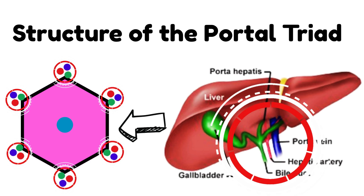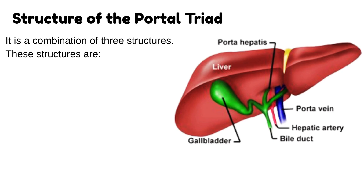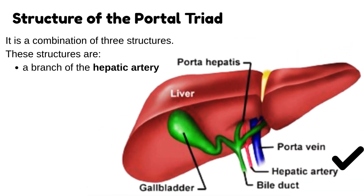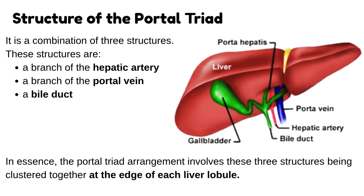What is the structure of the portal triad? It is a combination of three structures. These structures are a branch of the hepatic artery, a branch of the portal vein, and a bile duct. The portal triad arrangement involves these three structures being clustered together at the edge of each liver lobule.